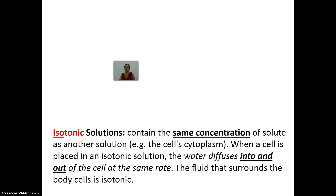The third osmotic condition is an isotonic solution. In an isotonic solution, there is equal concentration of solute and water both inside and outside the cell, which means water travels in and out of the cell in equal amounts. Water diffuses in and out at the same rate, so the cell stays the size it should.